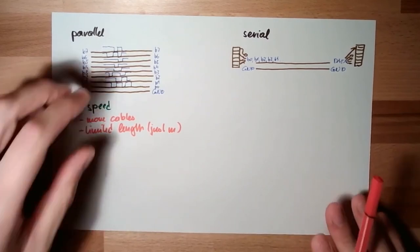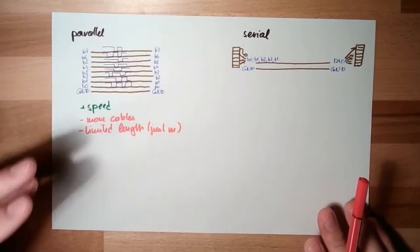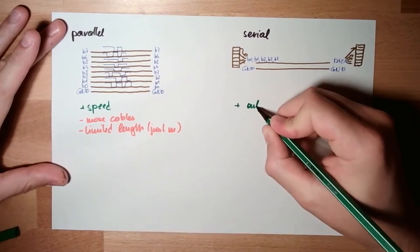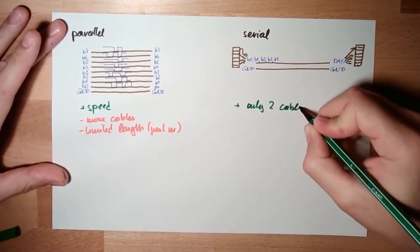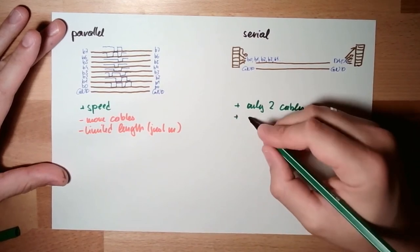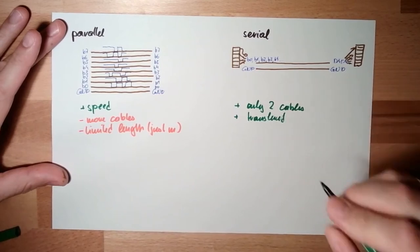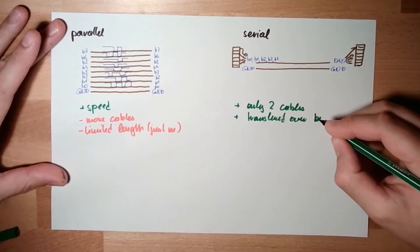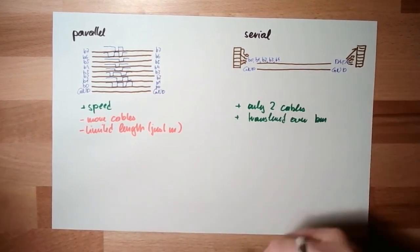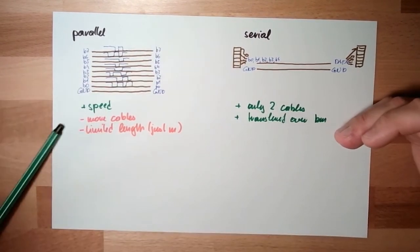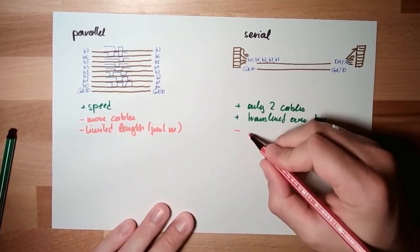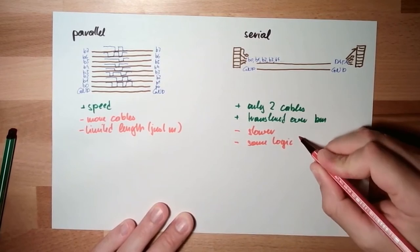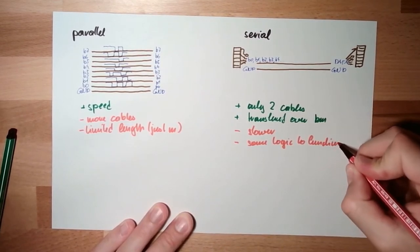This is the parallel thing. Depending on the frequency here, high frequency parallel systems, they have just centimeters. And here, the big advantage is only two cables. Can be transferred over kilometers if necessary.